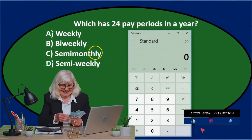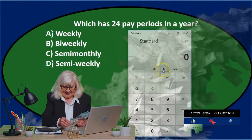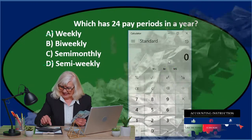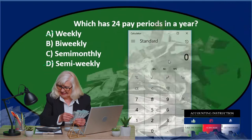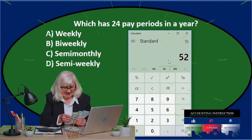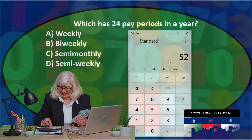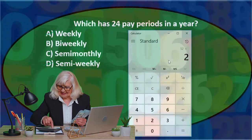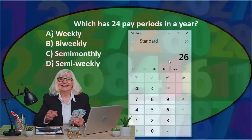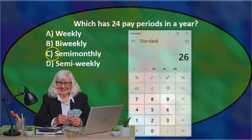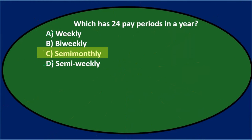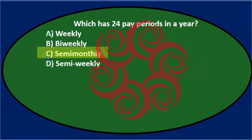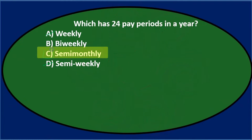If we pay every other week, it's not necessarily two pay periods per month — it's paid every other week, which is better thought of as 52 weeks in a year divided by 2, because we get paid every two weeks, which equals 26. So the difference is between 26 and 24. Semi-monthly is the correct answer with 24 pay periods, as opposed to bi-weekly, which gives 26 pay periods.